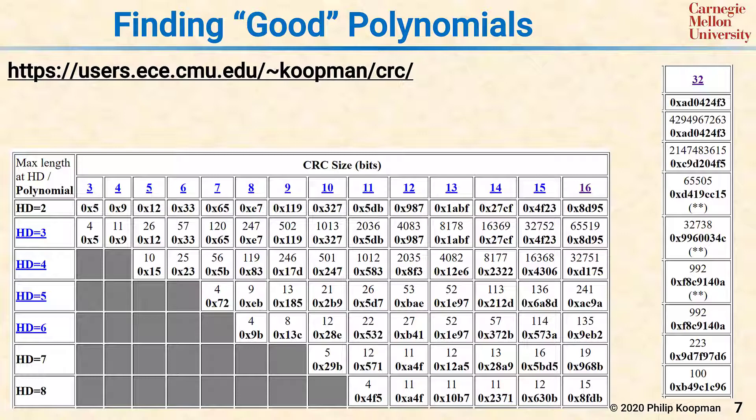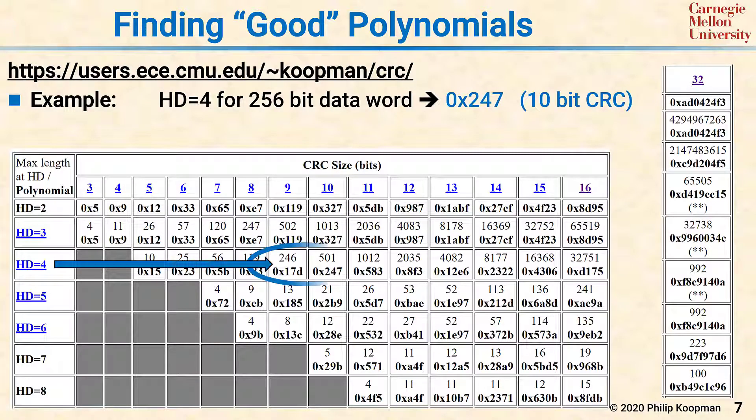As an example of using this table, consider that you want a Hamming distance of 4 and you have a 256-bit data word. The question you're asking is: what's the smallest, fewest number of bits CRC I can use that will give me Hamming distance of 4 for 256 bits of data word?